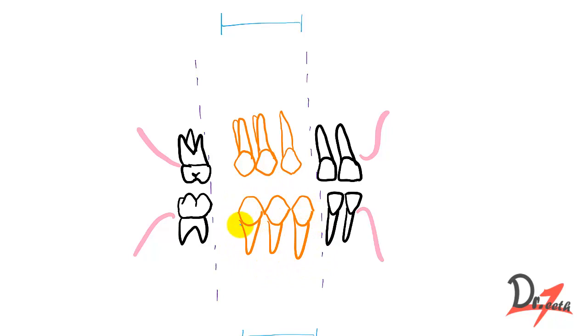They have this much of space remaining. So in the arch, we have this much of space remaining. This extra amount of space is called the leeway space of Nance. And it is greater in the mandibular arch compared to the maxillary arch.